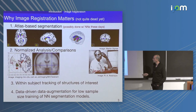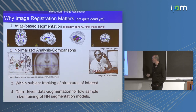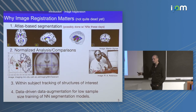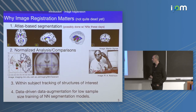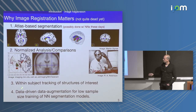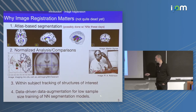So why would you want to do image registration? It used to be useful for atlas-based segmentation, though these days that's largely been replaced by deep learning. You probably still want it for normalized analysis — bringing images to a common coordinate system — or for tracking how pathology changes, or for radiation treatment planning. There's also a paper on using registration for data augmentation that can help with training segmentation models.